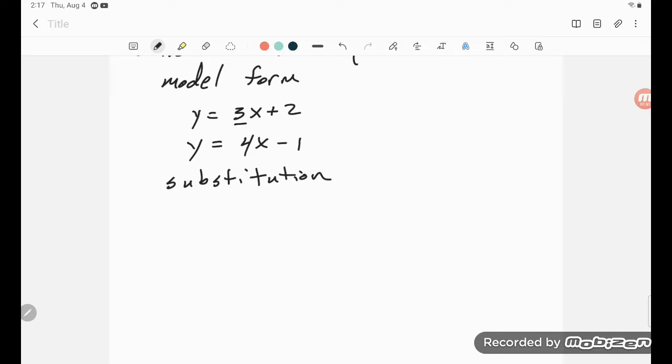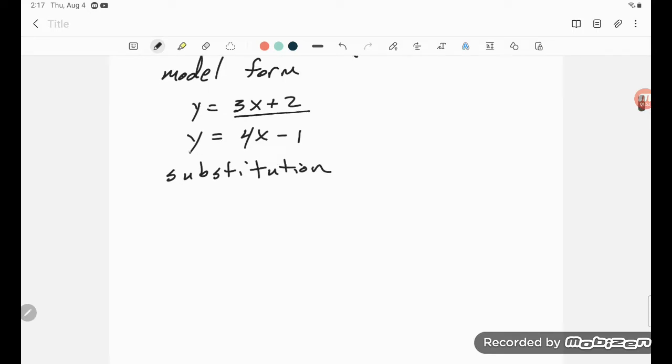Right, I have y equals 3x plus 2, but I also have y equals 4x minus 1. So if you're in this form, just put this y in for that one, and you end up with 4x minus 1 equals 3x plus 2.